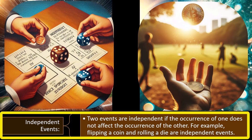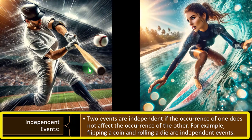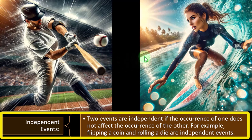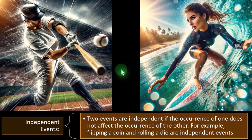Independent events: two events are independent if the occurrence of one does not affect the occurrence of the other. For example, flipping a coin and rolling a die are independent events. Similarly, whether a batter hits the ball and whether a surfer catches a wave are completely independent — one does not depend on the other. It might look like there's a correlation sometimes due to funny coincidences, but they are independent in nature. Trying to calculate the probability of one based on the other would not be wise.